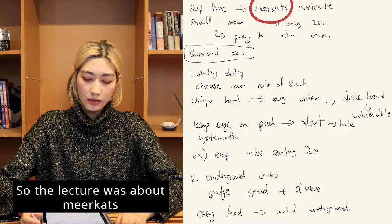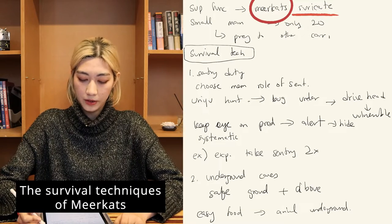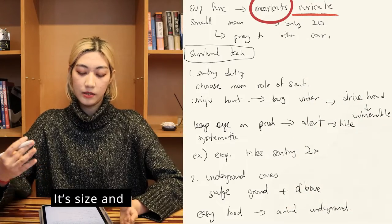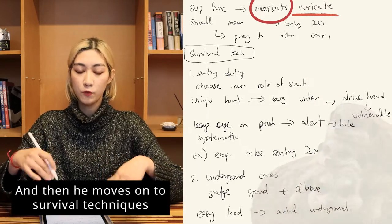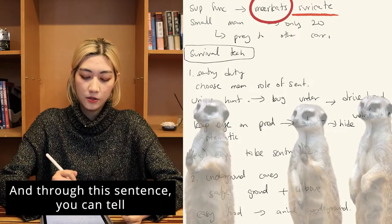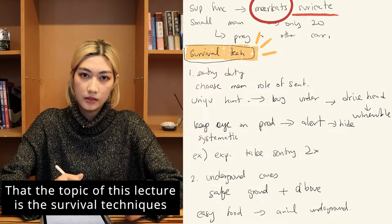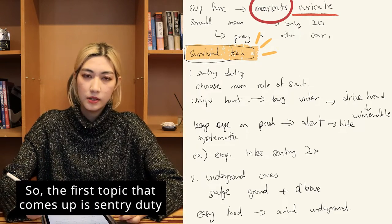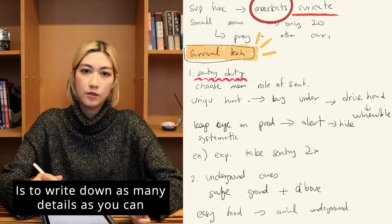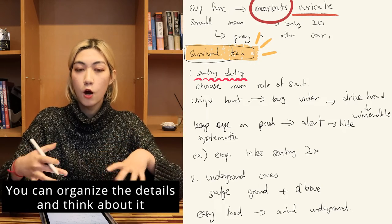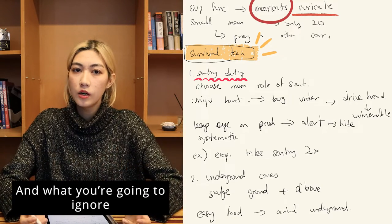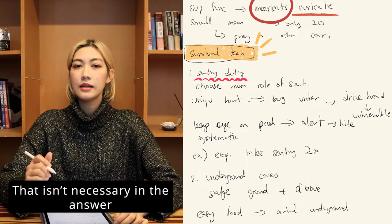The lecture was about meerkats — specifically, their survival techniques. The professor first describes the animal: its size, that it's a mammal, and that it becomes prey. Then he moves on to survival techniques, signaling the topic clearly. The first technique is sentry duty. The tip for this question is to write down as many details as you can, so that later — with 20 seconds to prepare — you can organize and decide which details to include and which minor ones, like the physical description of meerkats, to ignore.